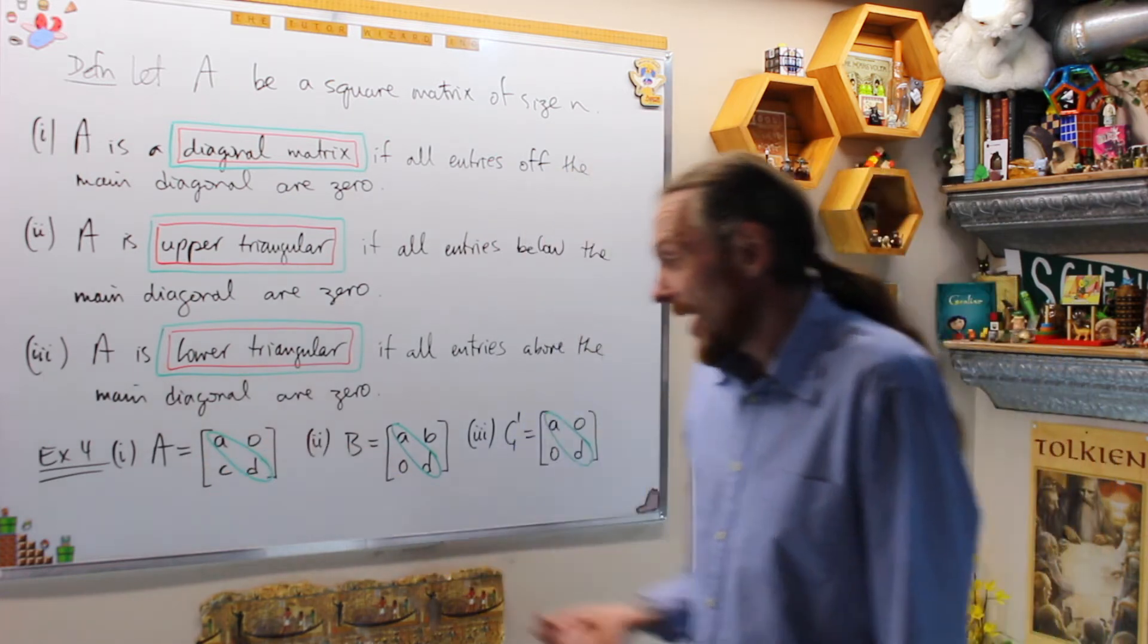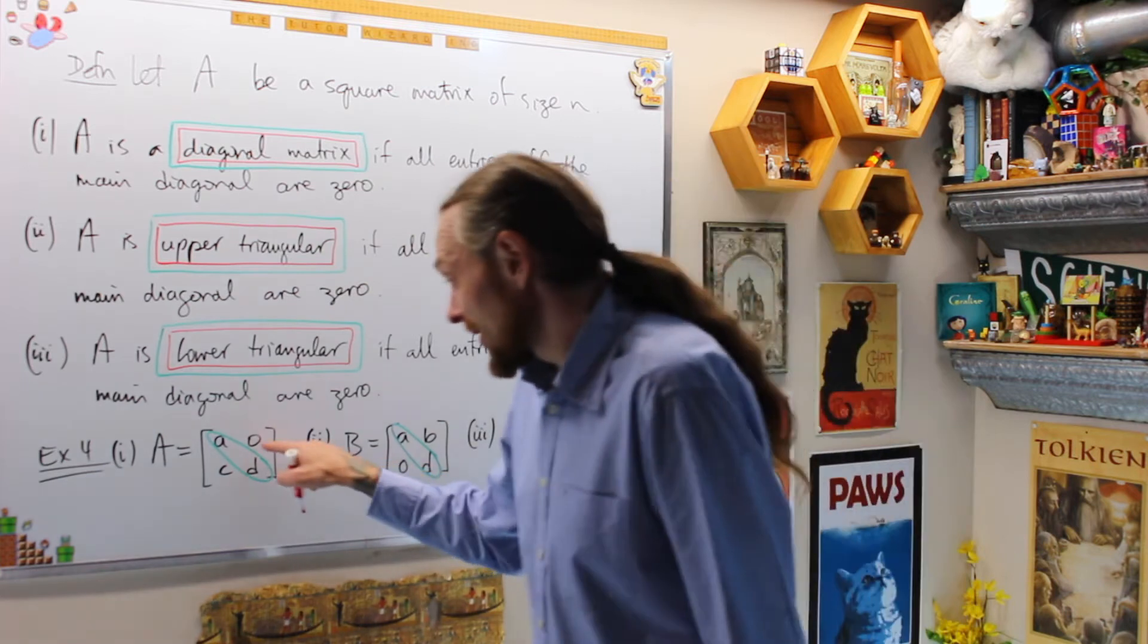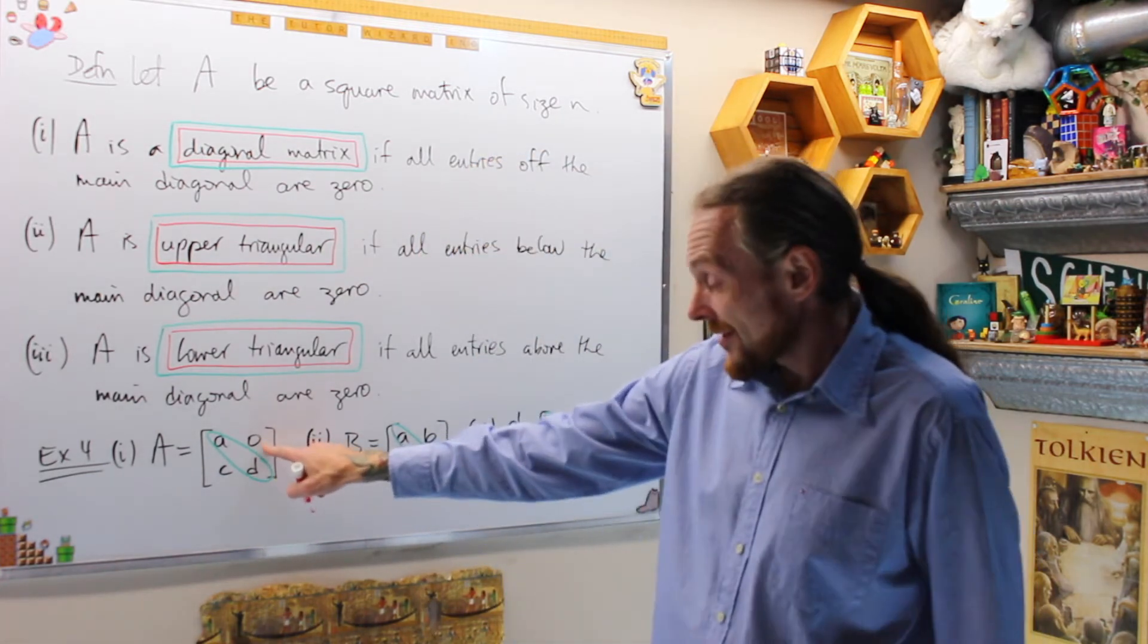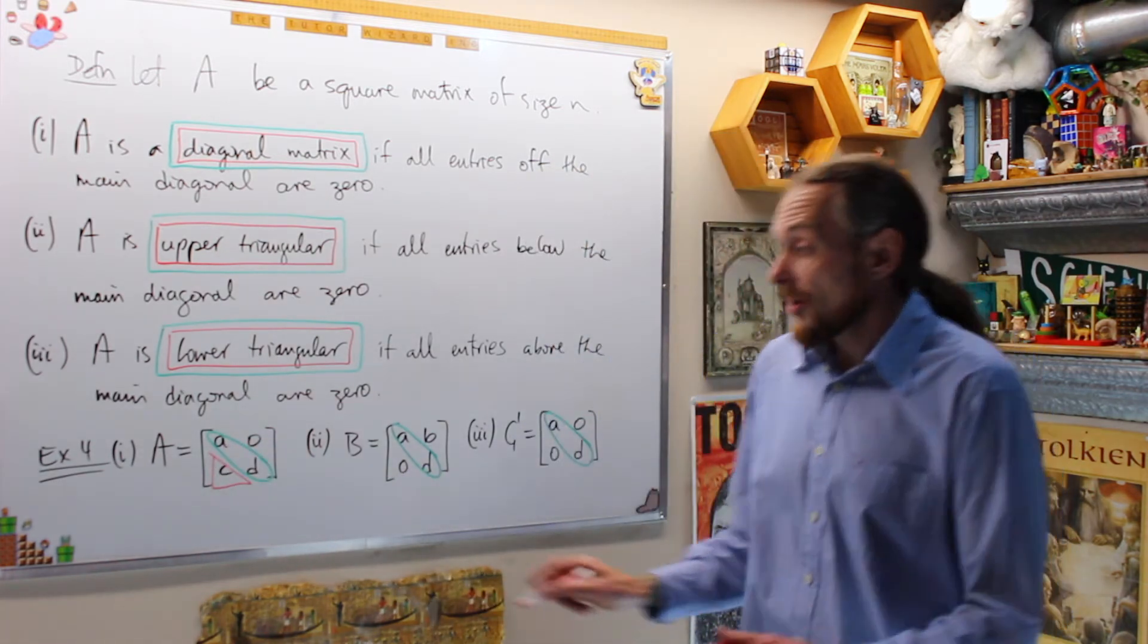Let's do an example. Example 4. Let A be [a, 0, c, d]. Then this is the main diagonal. I have zeros above the main diagonal. This is above the main diagonal and therefore we call this lower triangular.